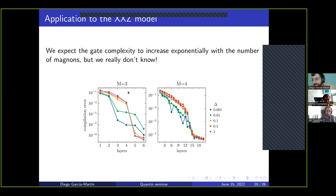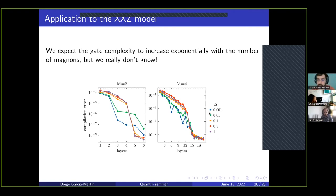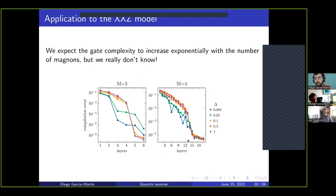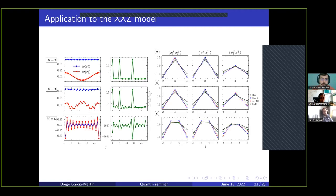For the interacting XXZ model we did some preliminary numerics with four different values of the anisotropy. Using a simple ansatz, you can achieve good compilation errors, but the number of layers appears to scale exponentially with the number of magnons. There might be some shortcut that we are not seeing at the moment — this is still an open question.